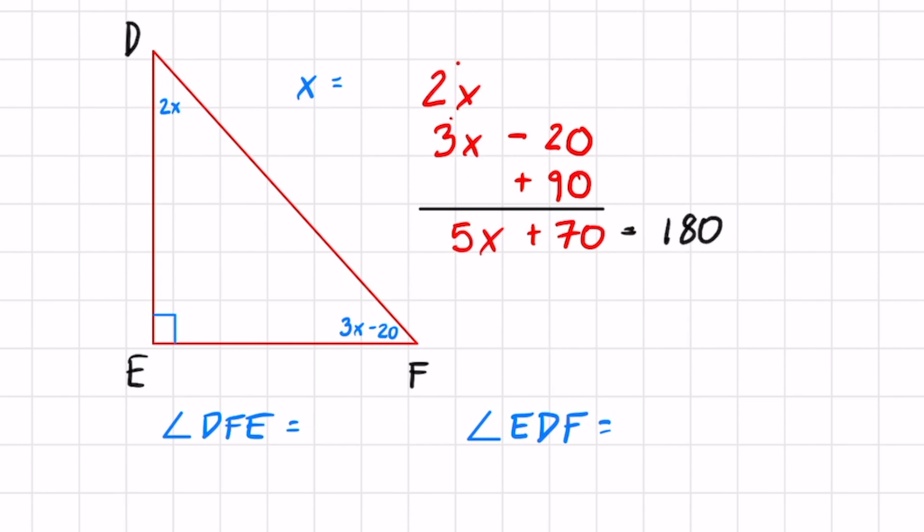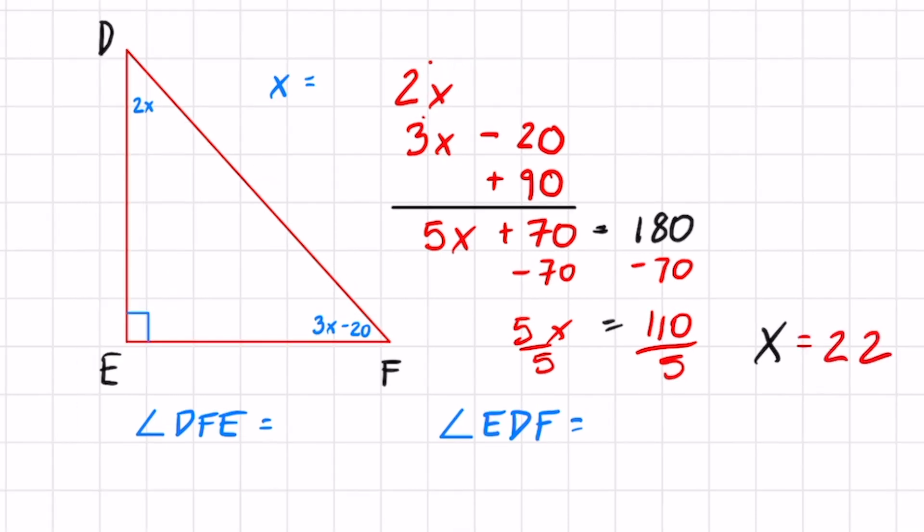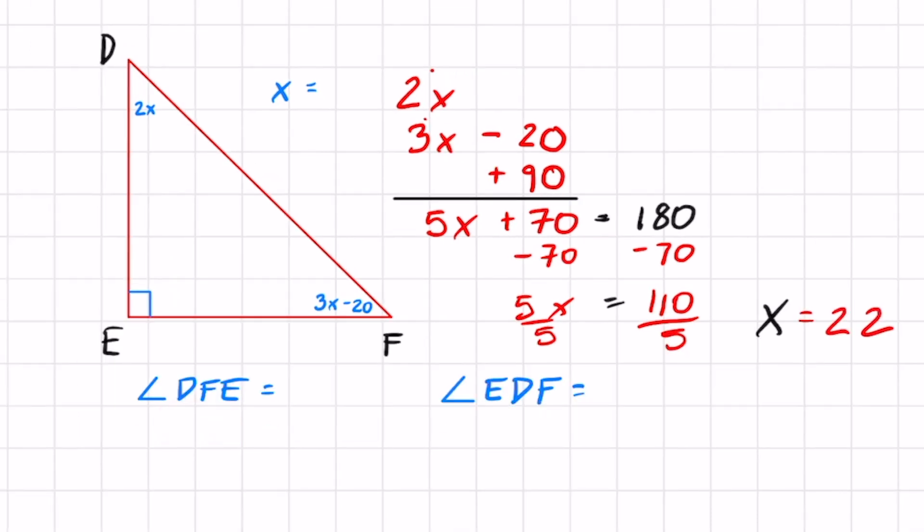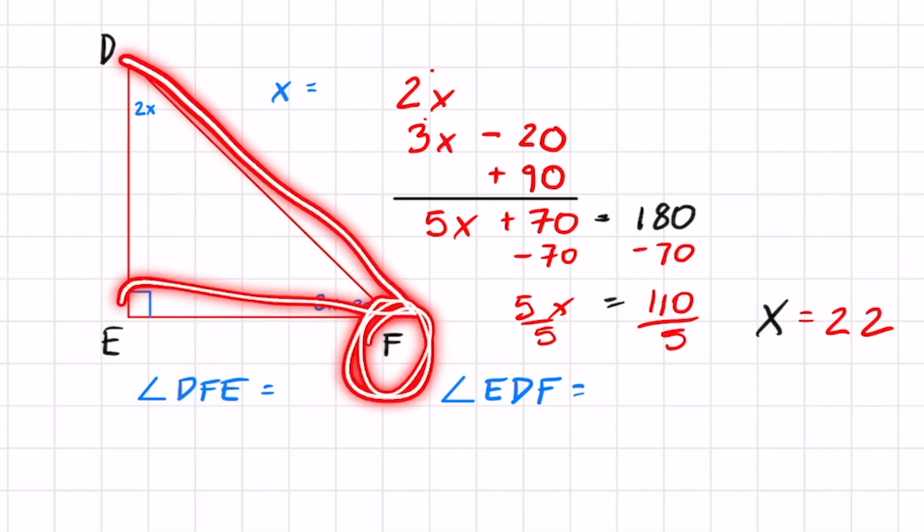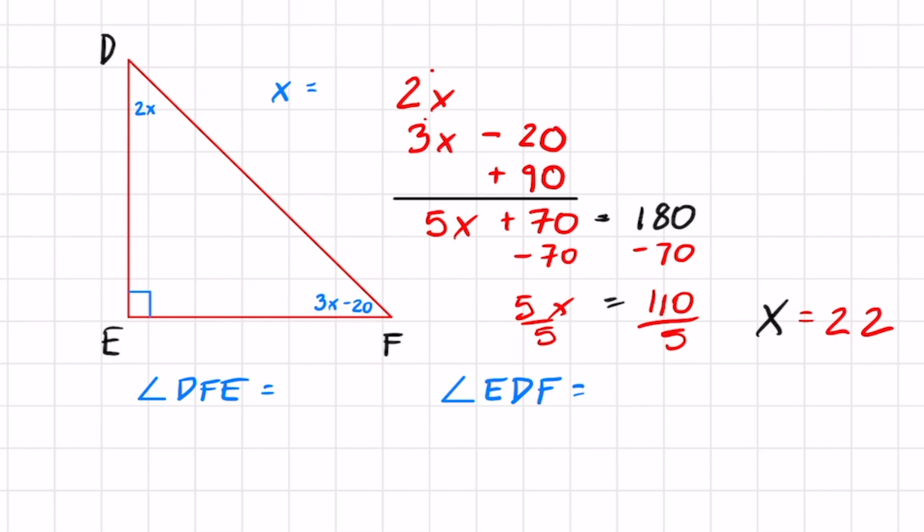It goes back to that two-step equation. Subtract 70 on both sides. Now you got 5x equaling 180 minus 70, which is 110. Divide by 5 on both sides and you got yourself x. X is gonna equal 22. When you got three letters like this, it's the middle one that you're trying to find. So DFE, you're finding this angle. All you got to do is plug in your value for x: three times 22 minus 20. If you did that correctly, that will equal 46.